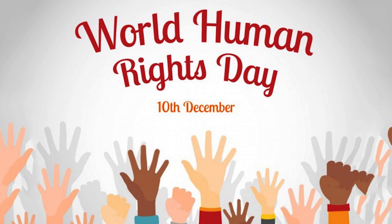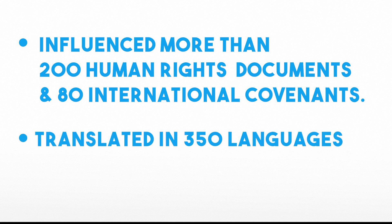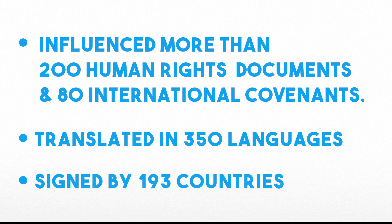The UDHR is the first international agreement on the basic principles of human rights. It sets out for the first time fundamental human rights to be universally protected. UDHR has 30 articles which are applicable to all humanity. The most translated document in the world, UDHR is considered a milestone in the history of human rights. It is considered one of the most important documents of the 20th century, having influenced more than 200 human rights documents including 80 international covenants. UDHR is translated into more than 350 languages and is signed by 193 countries of the world.